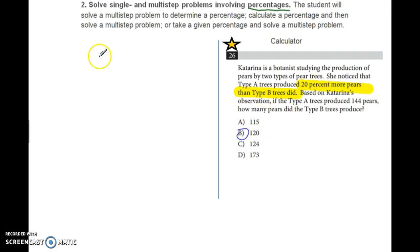The way you solve it is to set up an equation. 20% more than B equals A. So 1.2 times B equals A. Then plug in what we know: A is 144. So the equation is 1.2B = 144. Use your calculator to solve.